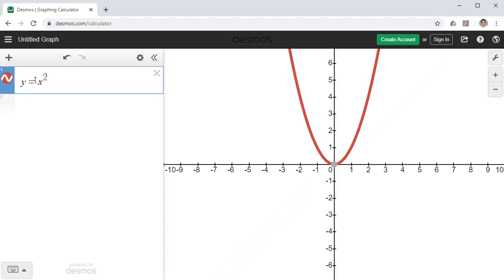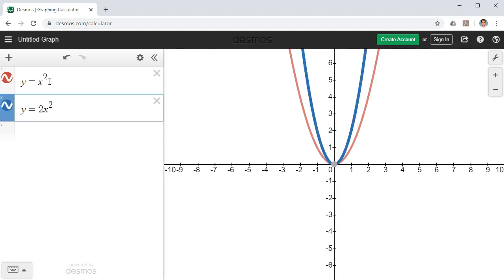And let's talk about changing the width of this. And what we're going to do is we're going to put a value in front of x squared. This is our a value. So let's try 2x squared. This is our blue graph. Notice that our parabola became thinner.